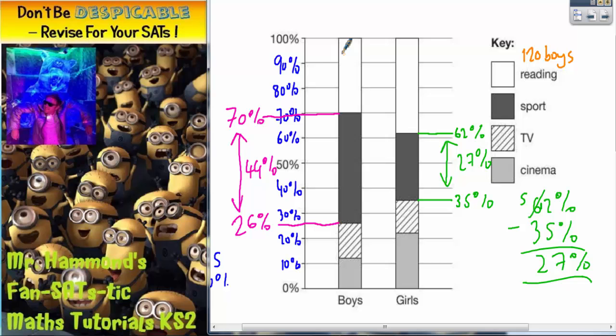Well, a quick look at the bar chart shows that white is the reading section. So, this section here, on the boys chart, must be worth 120 boys. Notice this time we're talking about actual boys rather than a percentage. So, 120 boys.